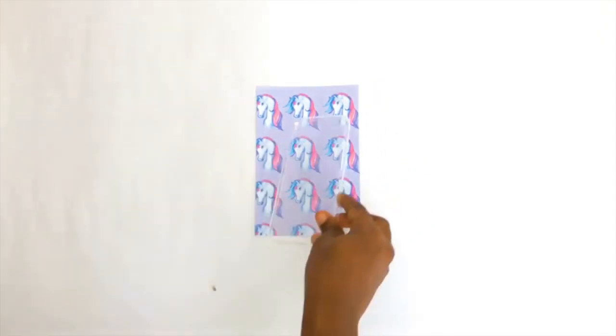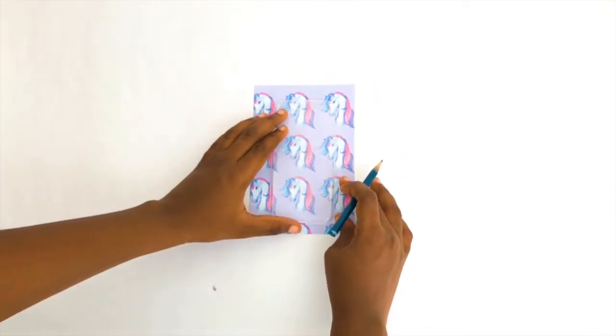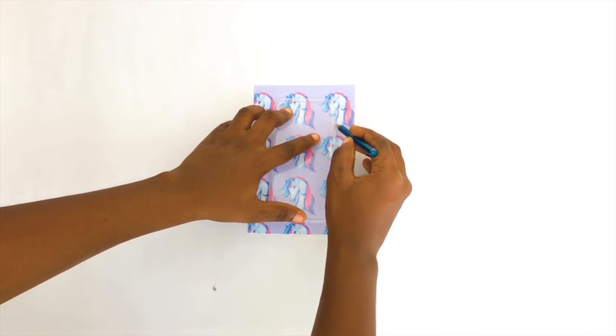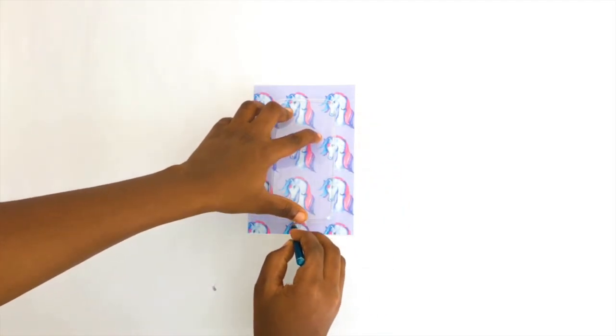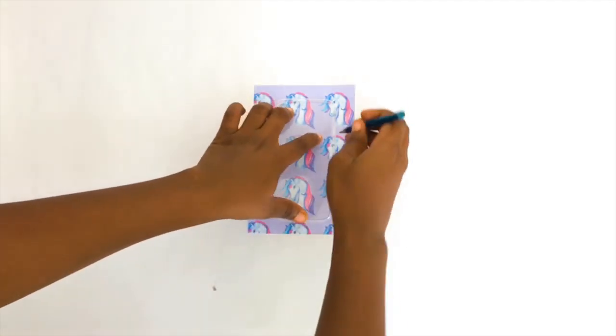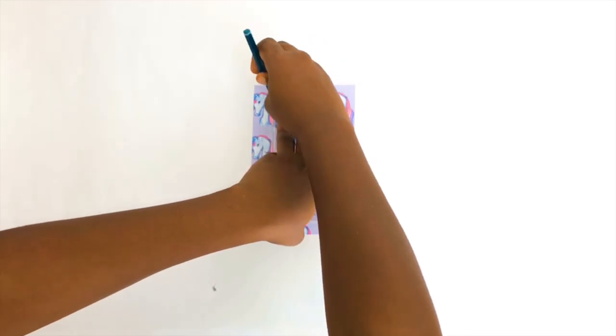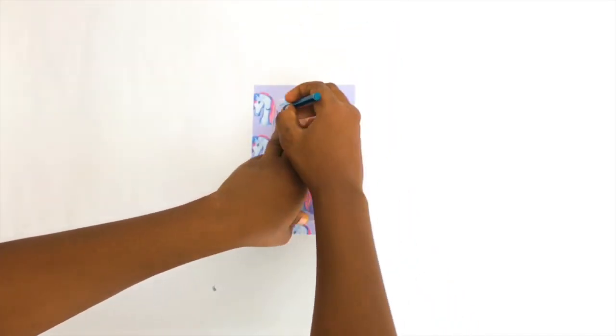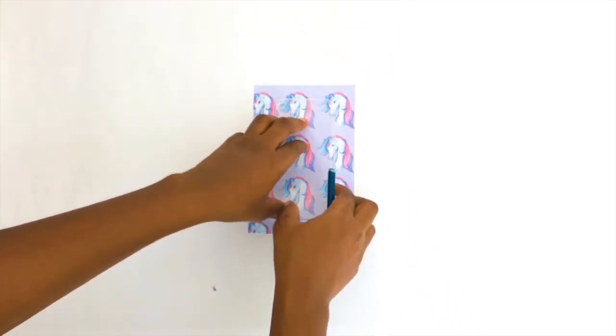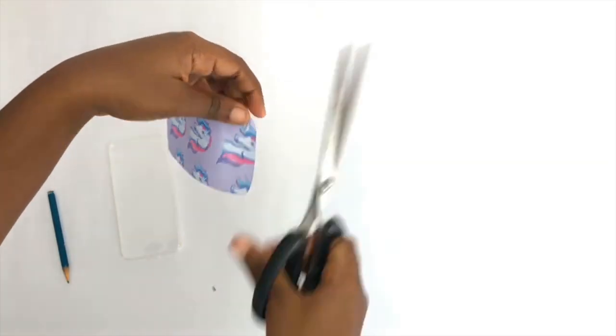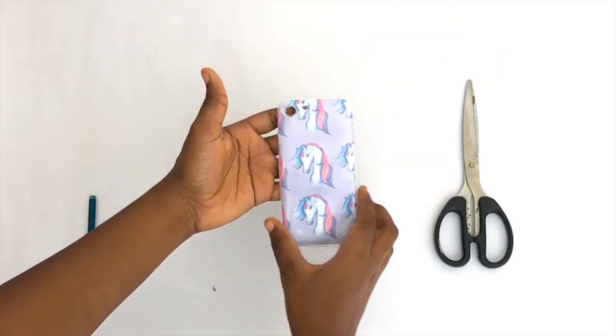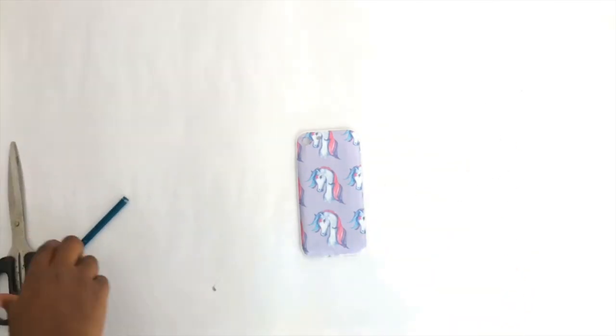For this DIY, you want to start by grabbing onto your clear case and place it on your template, then draw an outline of your case onto the template and also draw the outline for your flash and your camera. After you're done cutting everything out and insert your template in your case, it should look something like this.